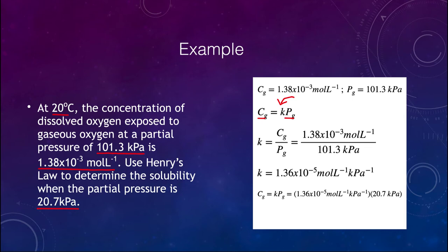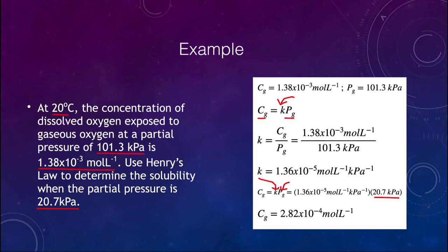The new solubility is k — which we just determined — multiplied by the partial pressure given in the problem, 20.7 kPa. Multiplying those two numbers, we find that the solubility will be 2.82 × 10⁻⁴ mol/L. So we solve in two steps: first find the constant, then find the new solubility.